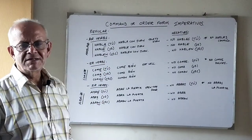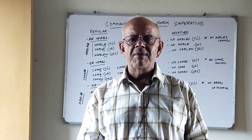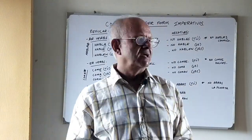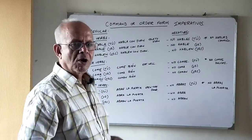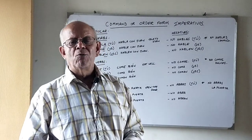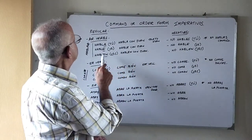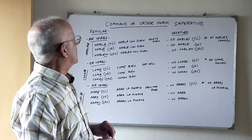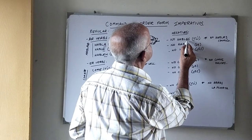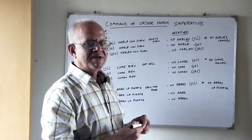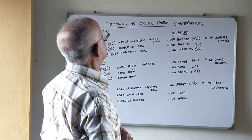So those are the formations of the command for regular verbs. Now, how do we give negative commands? A negative command means to tell someone not to do something. The negative formation only changes in the tú form. The usted and ustedes formations remain exactly the same as the positive order.